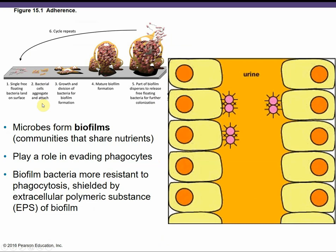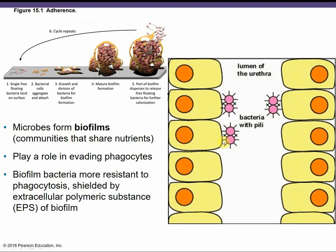Along with adherence, some microbes may form biofilms — large aggregate communities of microbes that share nutrients, increase the degree of adhesion, and ultimately become more resistant to phagocytosis. This is showing some adherence of E. coli bacteria with pili on the urinary tract in a urinary tract infection, where they stick to urinary tract cells so they're not as easily washed out with urine.